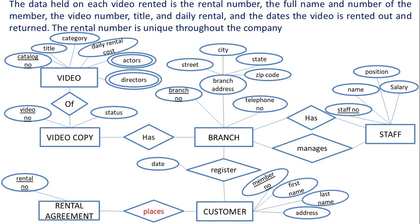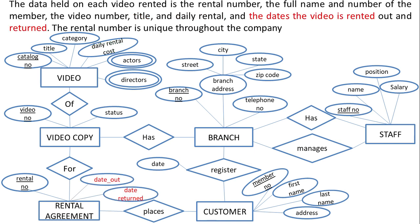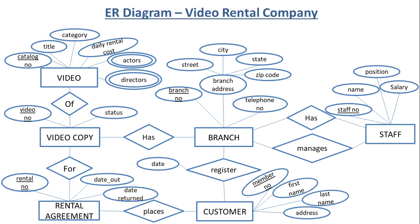We now have a relationship between customer and rental agreement, and also between rental agreement and video copy. Full name and number of member are attributes of customer. Video number is the attribute of copy. Title and daily rental cost are attributes of video. Date rented out and date returned are attributes of rental agreement. Here is our solution.